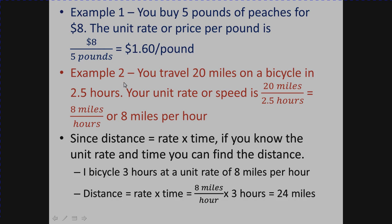Another example: I travel 20 miles on a bicycle in two and a half hours. To get the unit rate, I take 20 miles divided by 2.5 hours and get 8 miles per hour. The book also covers the formula distance equals rate times time. For example, traveling 60 miles per hour for two hours: 60 times 2 gives 120 miles.